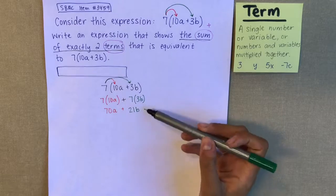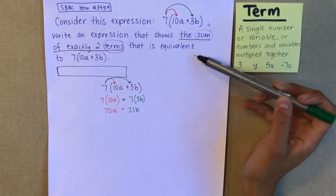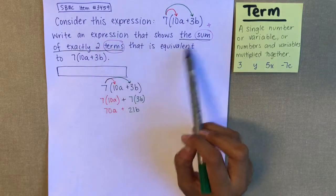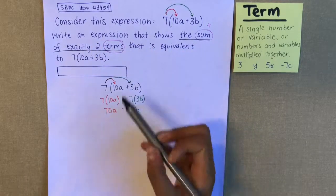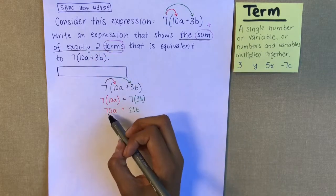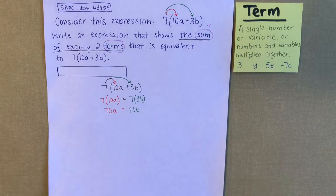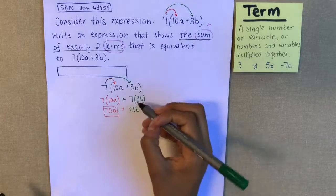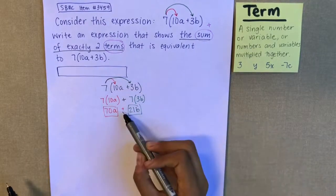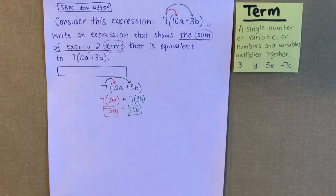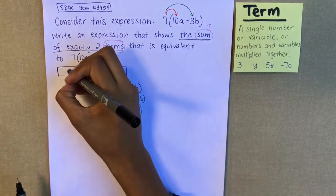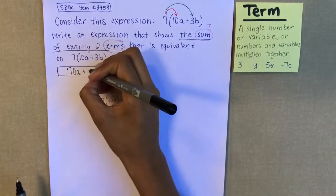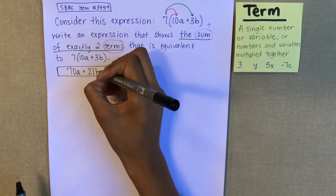Now let's see if this expression gives us what we want from the problem: write an expression that shows the sum — there's my addition sign — of exactly two terms. Here's one term in red, here's the other term in green, and I have a plus sign. My answer is 70a plus 21b.